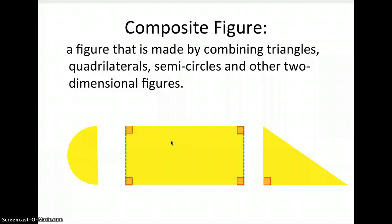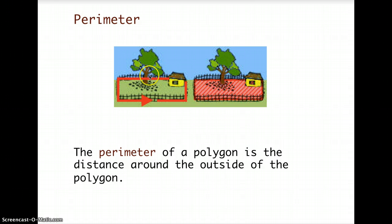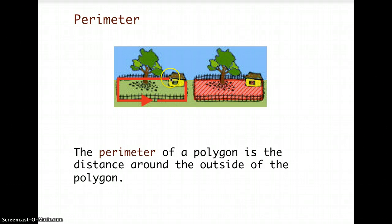Okay so I hope composite figure is clear. The next thing you need to understand is what is perimeter. The perimeter of a polygon is the distance around the outside of the polygon. If you can see here in this diagram or picture you see the fence. If we want to find the perimeter of the fence, it will be the distance from this point and then you go around until you went back to your original position. So it should be around your figure.